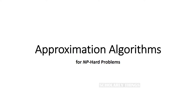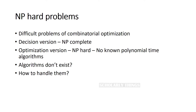Approximation algorithms for NP-hard problems. Consider difficult problems of combinatorial optimization such as the traveling salesman problem and the knapsack problem. The decision versions of these problems are NP-complete, and their optimization versions are NP-hard — problems that are at least as hard as the NP-complete problems. There are no known polynomial time algorithms for these problems, and there are theoretical reasons suggesting such algorithms don't exist. At the same time, these problems have huge practical importance, so how do we handle them?